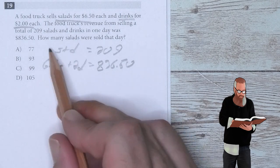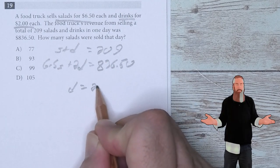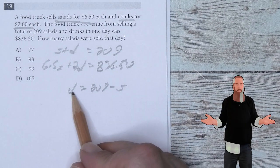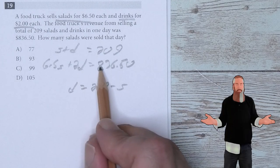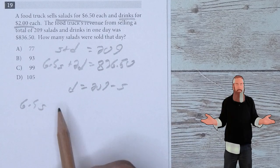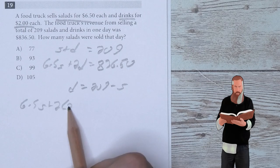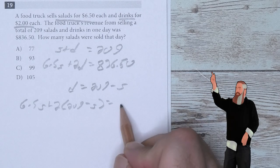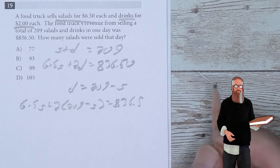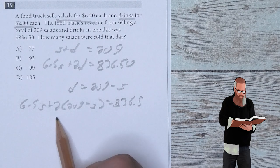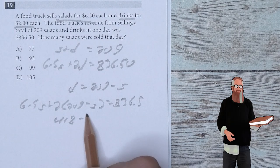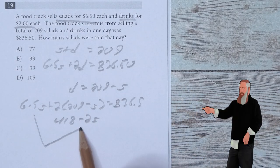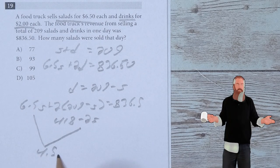$6.50 per salad plus $2 per drink gave us a total of $836.50. This means from the top equation that D is equal to 209 minus S. I can substitute this D value into the second equation, giving me 6.5S plus 2 times (209 minus S) equals 836.5.